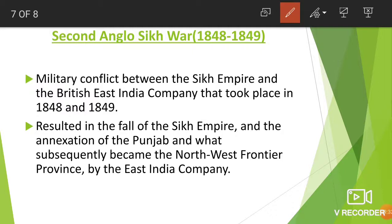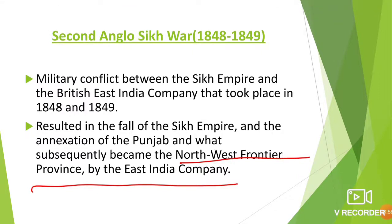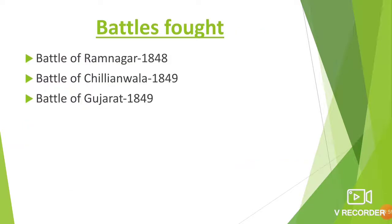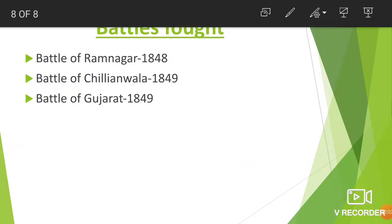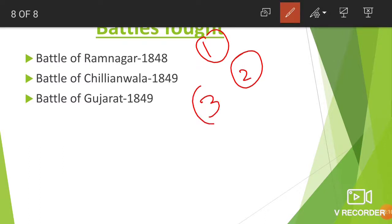As a result of the Second Anglo-Sikh War, the Sikh Empire was no longer an independent kingdom — it became the Northwest Frontier Province under the East India Company. This is how the Northwest Frontier Province came into existence. Some of the battles fought during the Second Anglo-Sikh War were the Battle of Ramnagar, the Battle of Chillianwala in 1849, and the Battle of Gujarat in 1849.